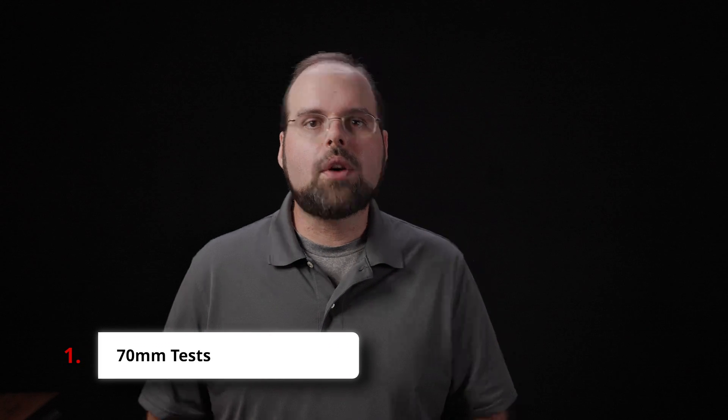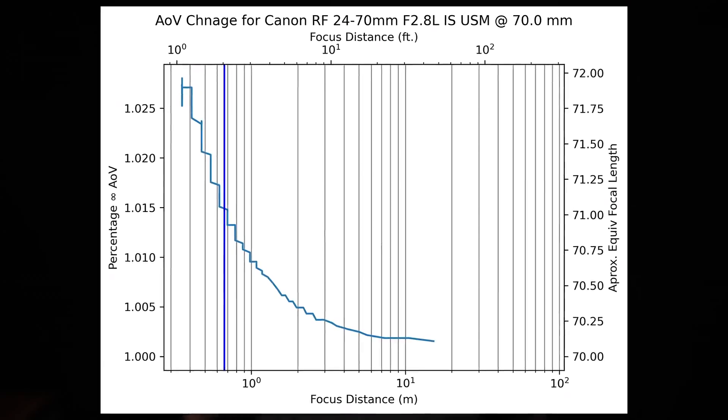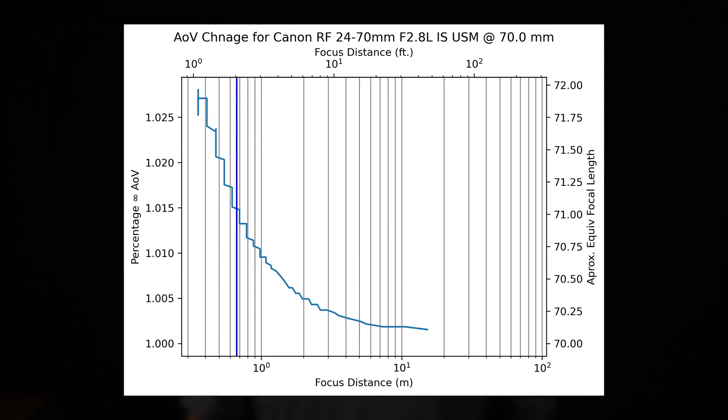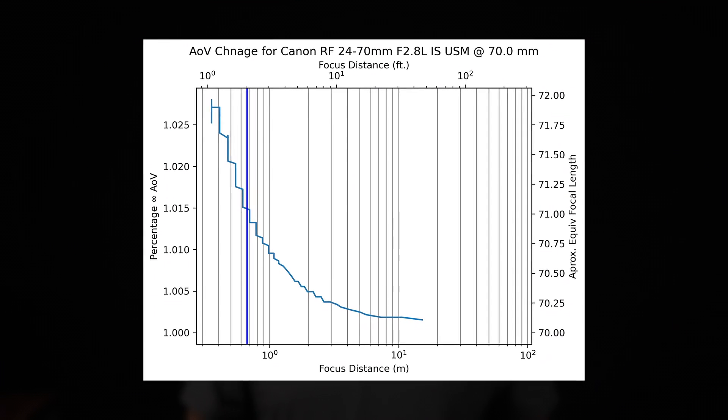Finally, at 70 millimeters, the total focus shift is only 2.8 percent, resulting in an angle of view equal to a 72 millimeter lens at the minimum focusing distance. Here, that first 2% of the breathing happens between 0.5 meters and infinity, or about 18-ish inches, and infinity.